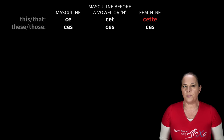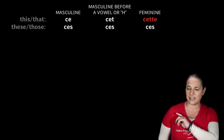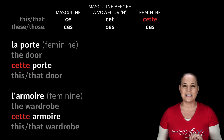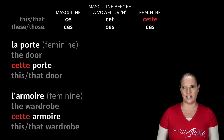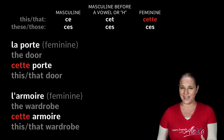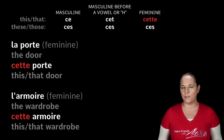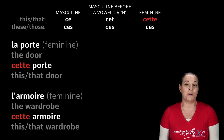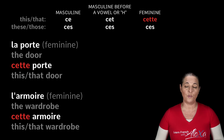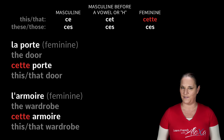No matter whether the word begins with an H or a vowel. For example: cette porte, this door; cette armoire, this wardrobe. As you can see, armoire begins with a vowel, but because it's feminine, we still add C-E-T-T-E in front of it.